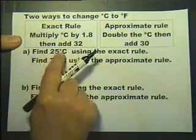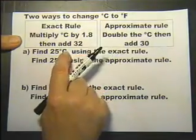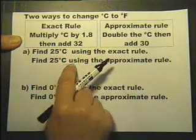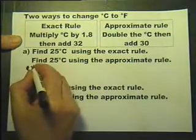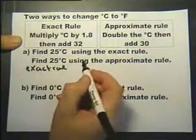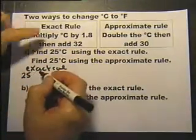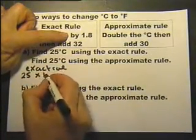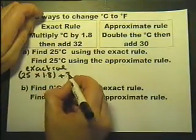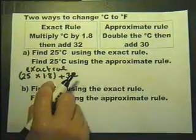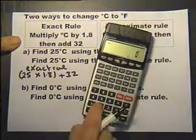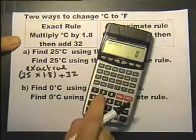Find 25 degrees Celsius using the exact rule and do the same for the approximate rule. So let's look at the exact rule first. We're going to take the 25 and multiply it by 1.8, and then add 32. Put a bracket round there because that means we have to do that bit first. 25 multiplied by 1.8 equals...